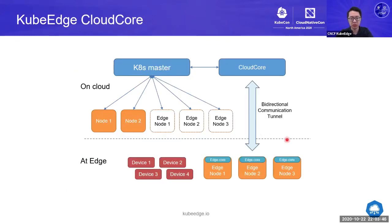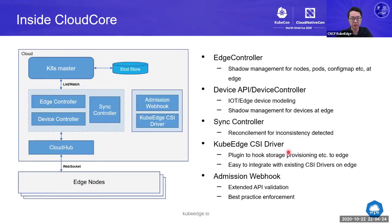The Cloud Core is dealing with shadow management for nodes on the edge and also the devices. To the Kubernetes cluster, all node objects and application object lifecycle actions are reflected, so the cluster treats everything the same. Inside Cloud Core, we have edge controllers for shadow management of core APIs including nodes, pods, and config maps. For IoT and industrial device management, we introduced a set of device APIs including device model and device instance, and also a device controller to reflect lifecycle updates.